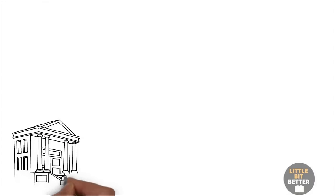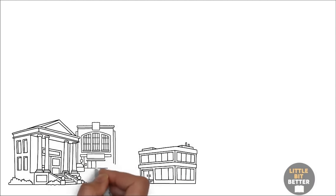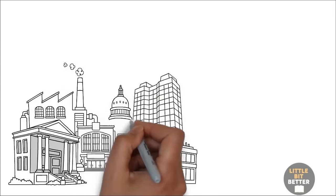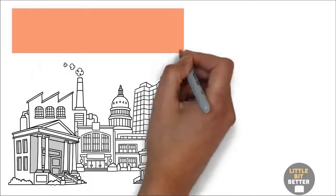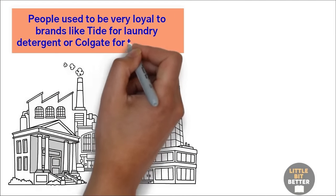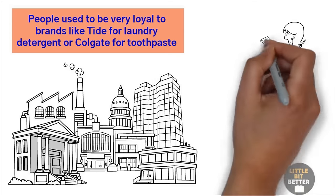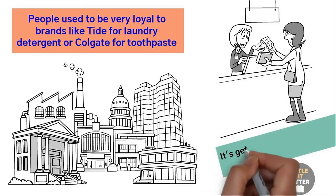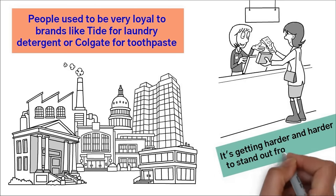Today, it's becoming harder and harder for companies to be profitable. They are fighting over the same limited customers and resources. If you've noticed, products are becoming more and more similar to each other. For example, people used to be very loyal to brands like Tide for laundry detergent, or Colgate for toothpaste. But now, if some other brand is on sale, they might switch to that instead. It's getting harder and harder to stand out from the crowd.